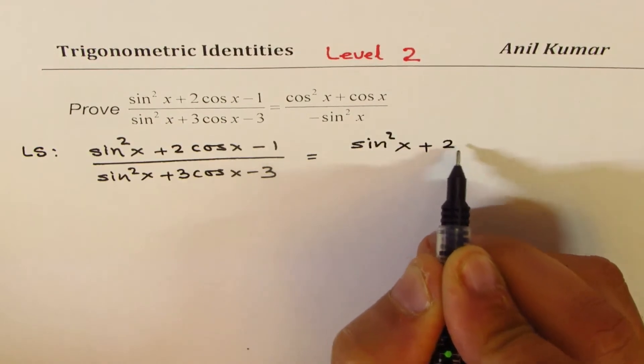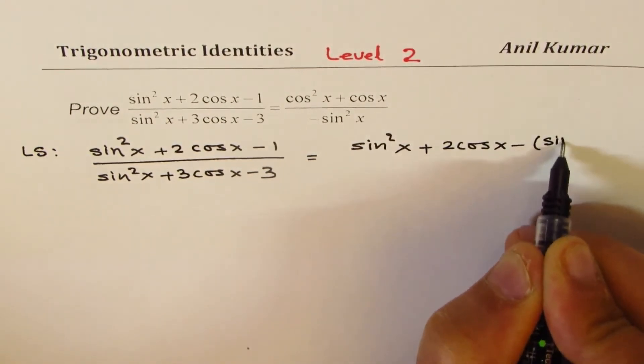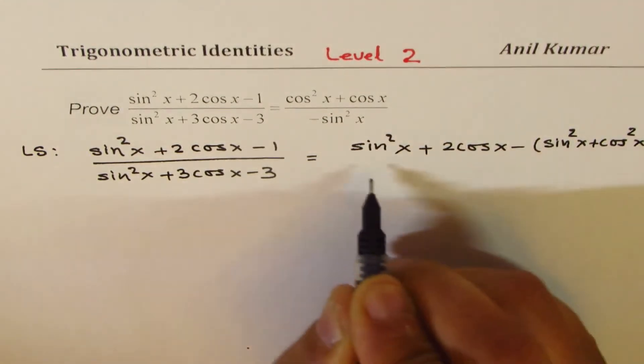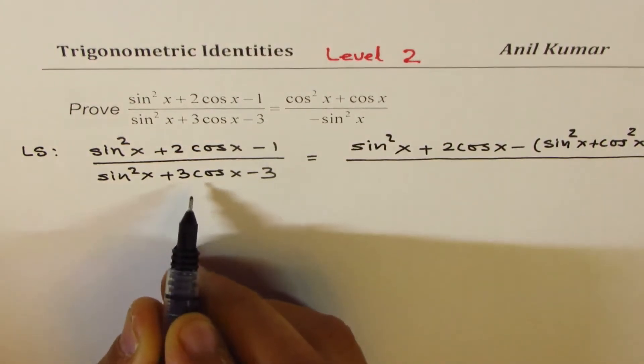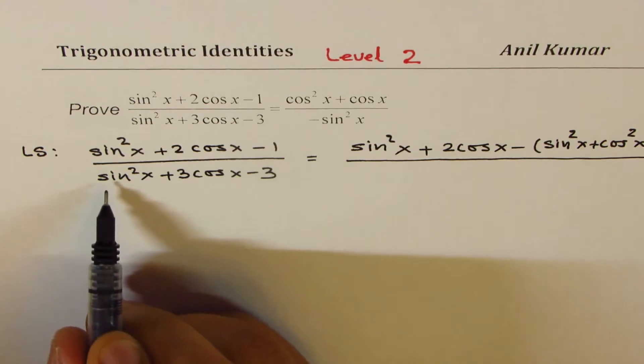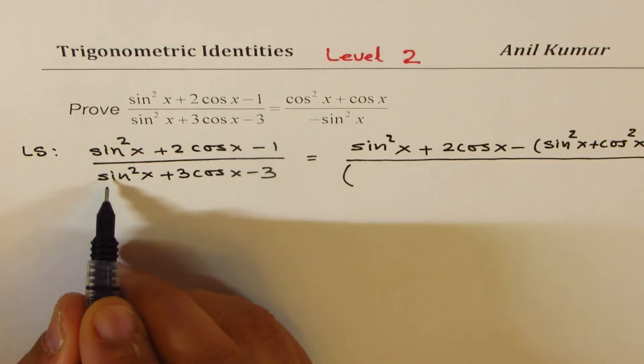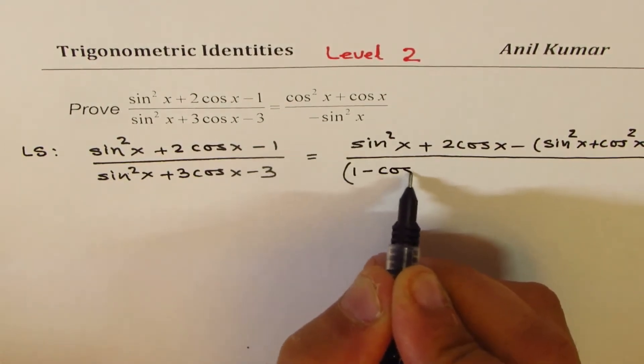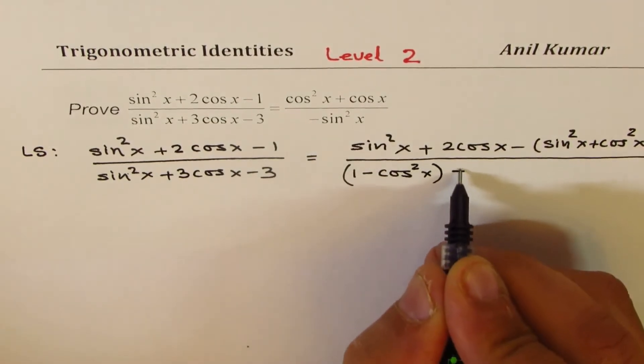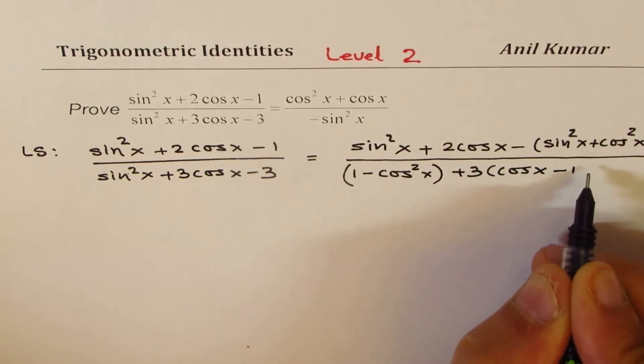So we get sin²x + 2cos x - sin²x + cos²x in the numerator. In the denominator, I can take 3 common, and I can also write sin²x as 1 - cos²x. So I am writing sin²x as 1 - cos²x. And here I am taking 3 common. So we get cos x - cos x - 1.